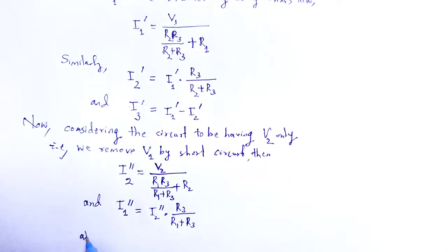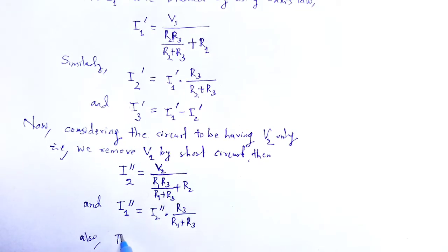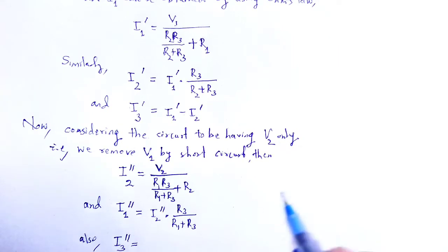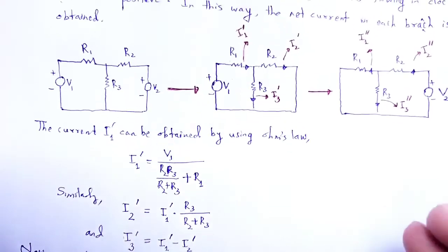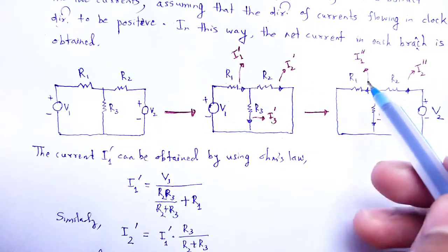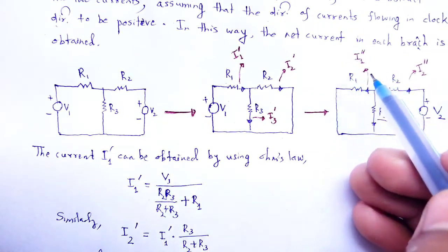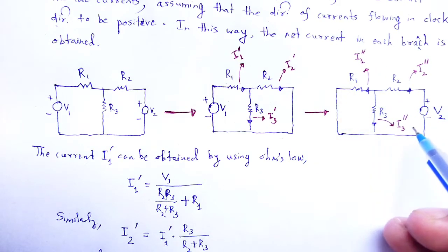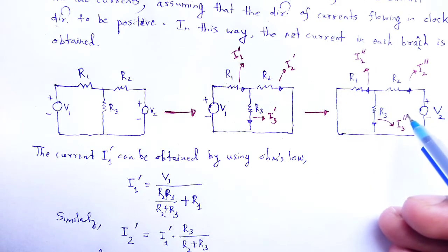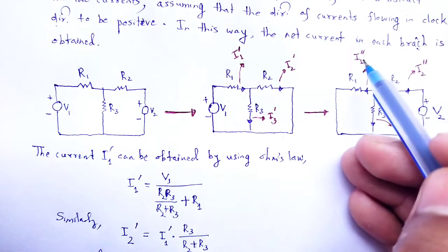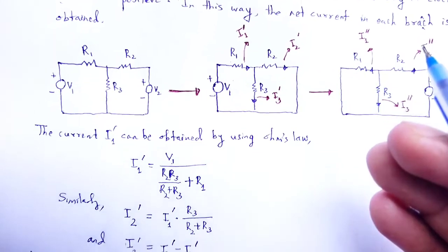Also, I2 double dash is divided into I1 double dash and I3 double dash. So I3 double dash is equal to I2 double dash minus I1 double dash.